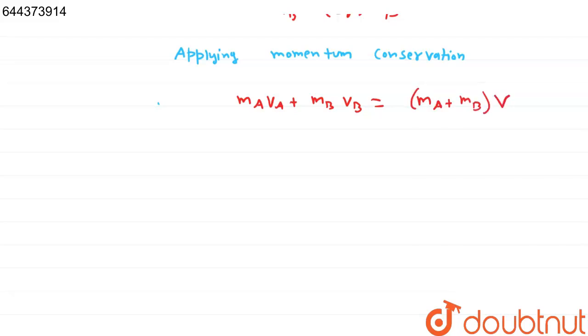We have written m_A plus m_B combined because it is given that both have inelastic collision, meaning